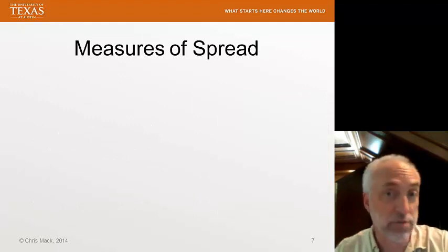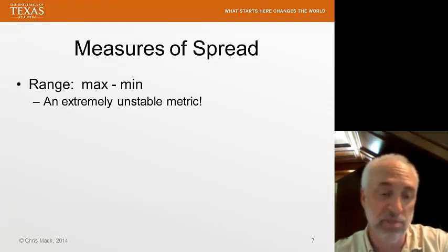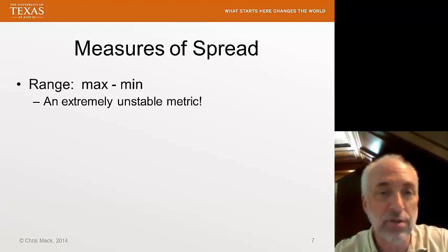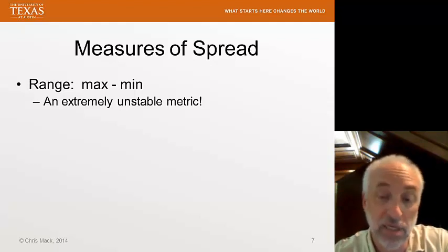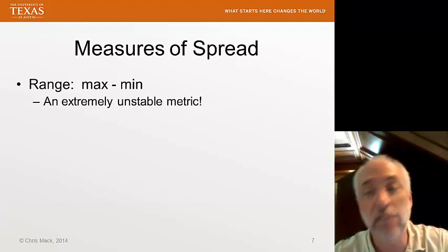Now besides the measure of central tendency, we need a measure of spread. The simplest measure of spread is the range, the max value in the data set minus the min value. Well, this is not a very good measure. It's a very unstable measure.